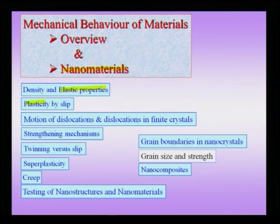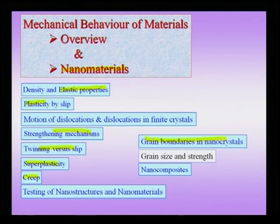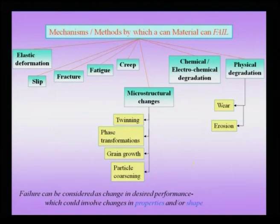Some of the properties we will be talking about are elastic properties, plasticity, strengthening mechanisms, the switch over from twinning to slip, important properties like super plasticity and creep in nano materials, and the role of grain boundaries in nano structured materials. We will also take up some hybrids like nano composites, where a lot of research is being conducted nowadays. We will alternate between the basic property in bulk materials, the description of the property, and then take up specific properties of nano materials.